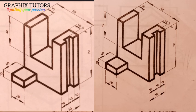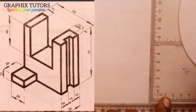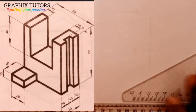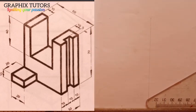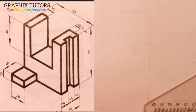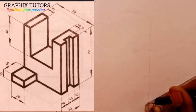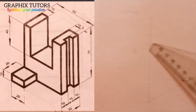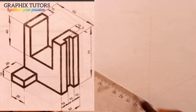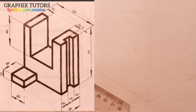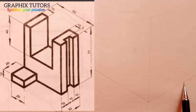The first thing you have to do is draw your axes — your X, Y, and Z axis — where your X and Z axes are at 30 degrees. You draw your Y axis this way, place your set square, draw your X axis, and turn it all around like this.